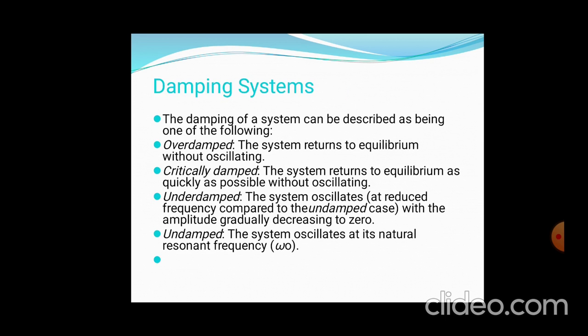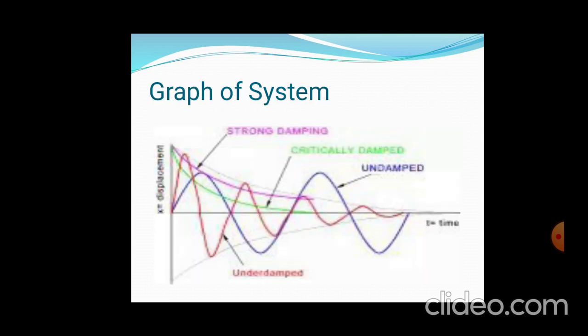Now, what are the different damping systems available? That is overdamped, critically damped, underdamped, and undamped. Overdamped: it returns to equilibrium conditions without oscillation, going back to its original condition in one way. Critically damped: it quickly returns to its original condition without oscillation — like a door damper. Underdamped: oscillations go to the original condition but with some oscillations over a time interval. Undamped oscillates at its natural frequency.